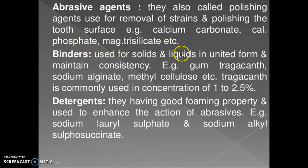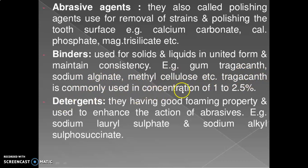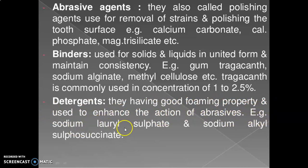Binders are used to keep solids and liquids in a united form and maintain consistency. Examples include gum tragacanth, sodium alginate, and methyl cellulose. Tragacanth is commonly used at a concentration of 1 to 2.5 percent. Detergents have good foaming properties and are used to enhance the action of abrasives.